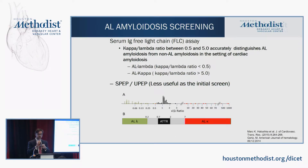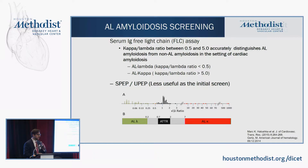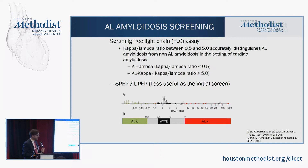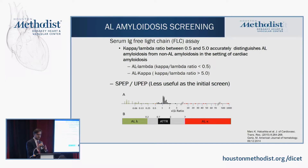For screening, the free light chain assay looks at kappa and lambda light chains and their ratio. If kappa is predominant, the ratio is typically greater than 5; if lambda predominant, less than 0.5. SPEP and UPEP are less useful as initial screens. If someone is suspicious for amyloid with a ratio between 0.5 and 5, think about TTR amyloidosis.